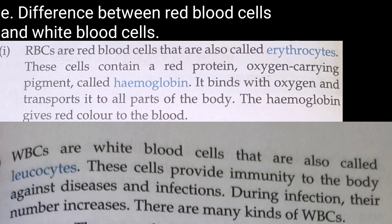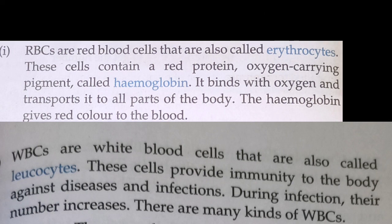White blood cells, or WBCs, also called leukocytes, provide immunity to the body against diseases and infections. During infection, their number increases. There are many kinds of WBC cells in the body.